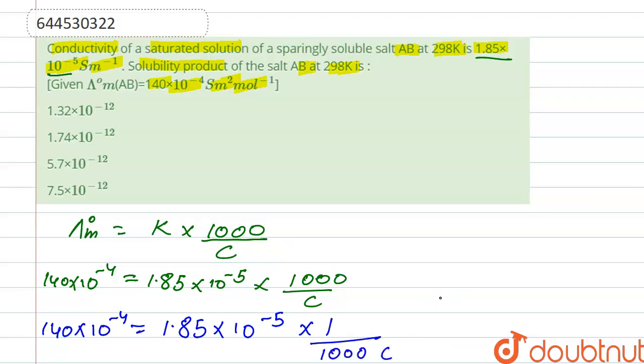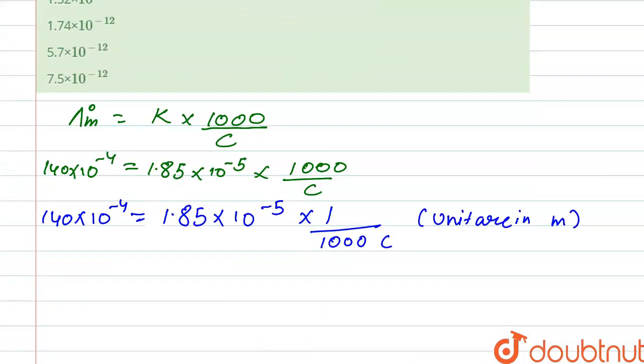Units are in meter because units are in meter. So after solving this we get the value of C which is approximately 1.32 × 10^-6.